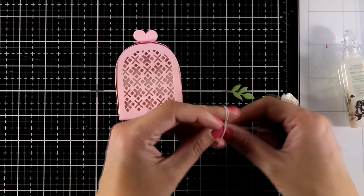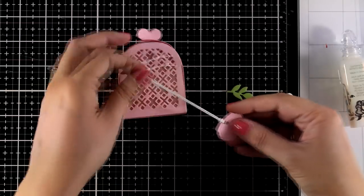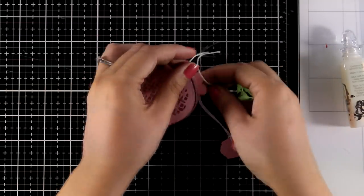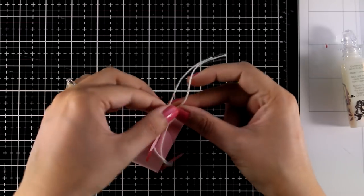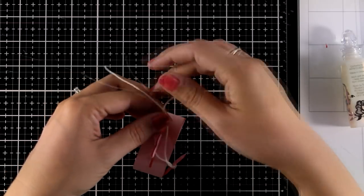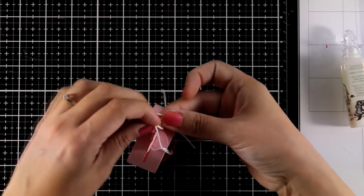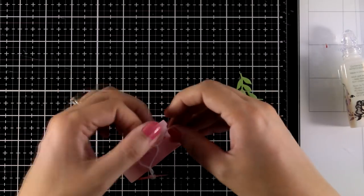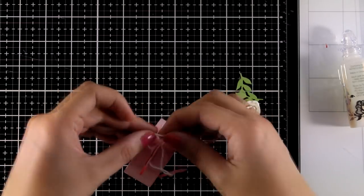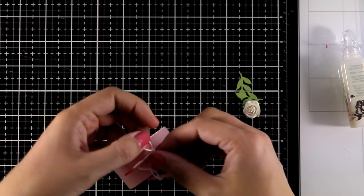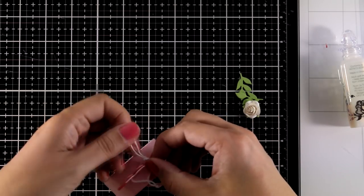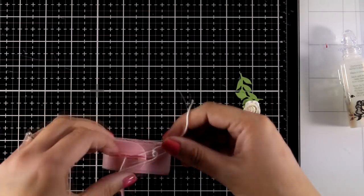So I have here some white thread I'm going to wrap it around my little tag it already gives you a hole once you cut it out and then I'm going to tie a double knot around the hearts. This is going to allow the recipient to remove this easily and open up the box with no problem at all. I'm going to cut off the excess thread.